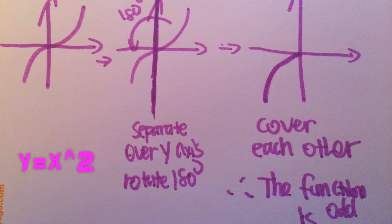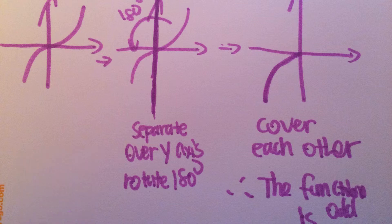We can also do this question by looking at its graph. This is what the graph looks like. If we separate the function from the y-axis, there are two parts. If we rotate one of those two parts 180 degrees, or pi in radians, they will cover each other. If we take the graph of y equals to x cubed and rotate, they will cover each other, which proves that y equals to x cubed is an odd function.